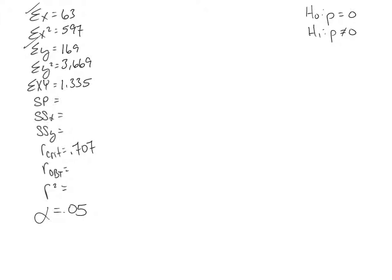So now what we're looking for is SP, sum of squares X, sum of squares Y, and then we'll be able to find our R obtained. Okay. So, again, our R obtained is that SP divided by square root of sum of squares X times sum of squares Y. So let's find our, let's do our SP first.